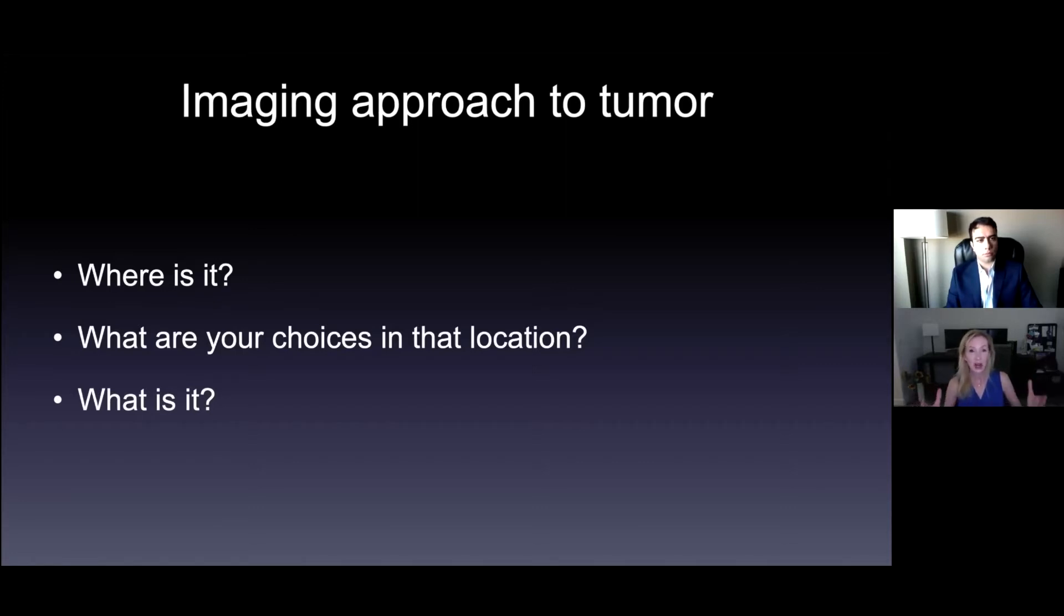Those things make a huge difference, can help tell you what it is. So you localize it - where is it? What are your choices in that location? There are only a certain number of choices in any of those spots. And then based on other factors, you might be able to say exactly what it is, or at least narrow it down to one or two things.